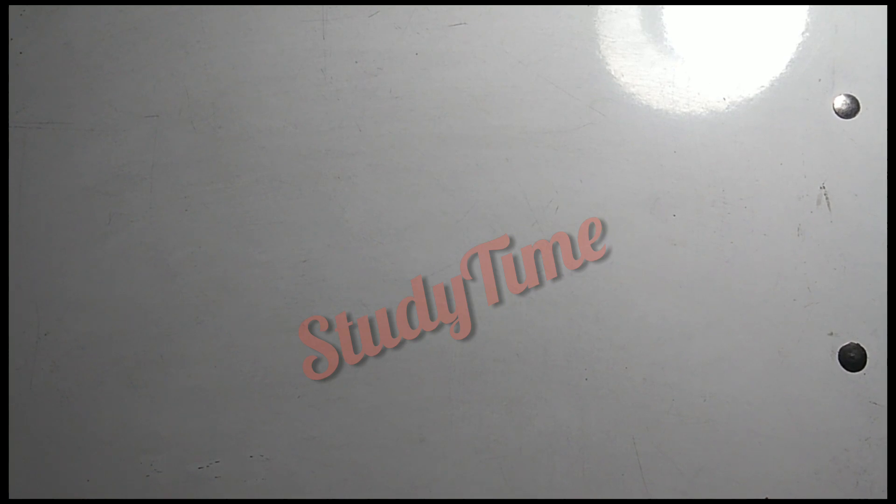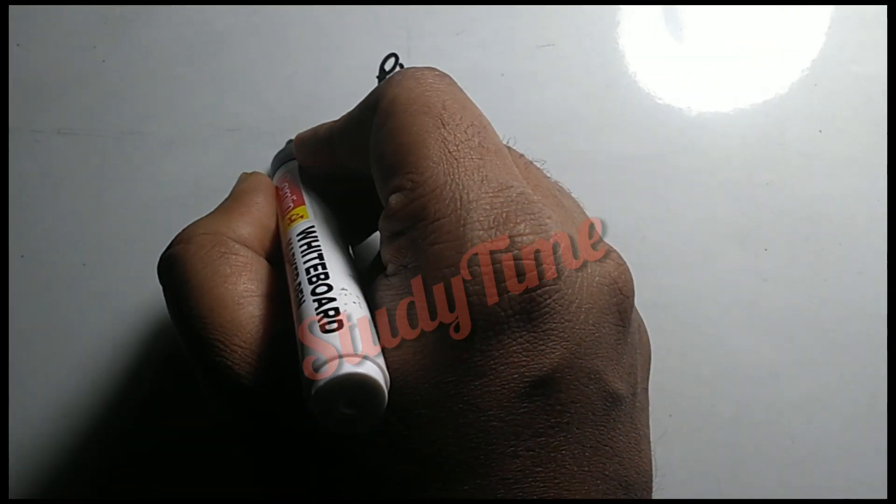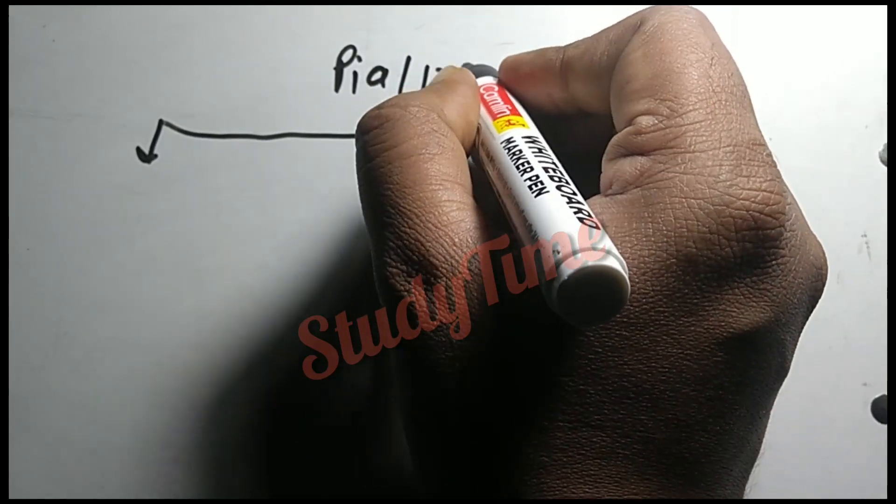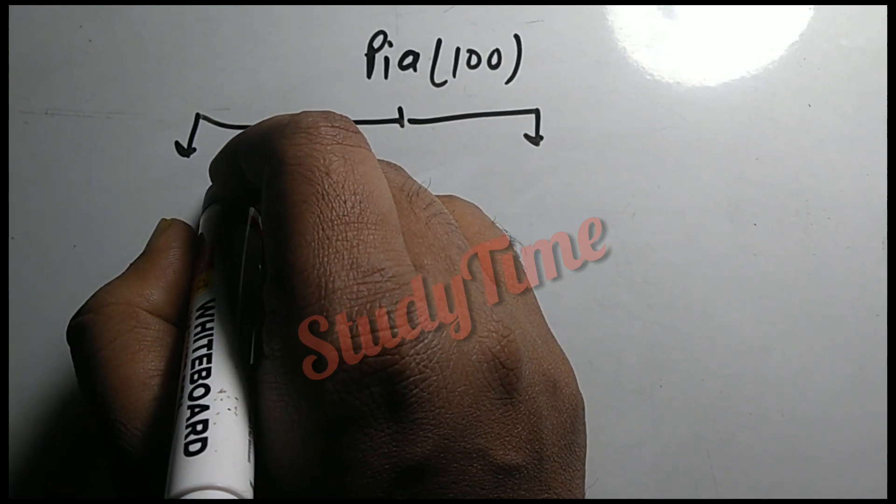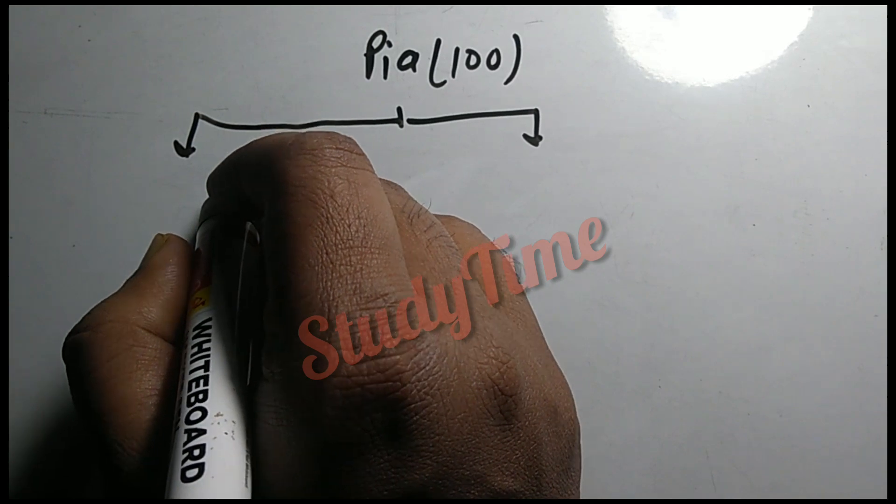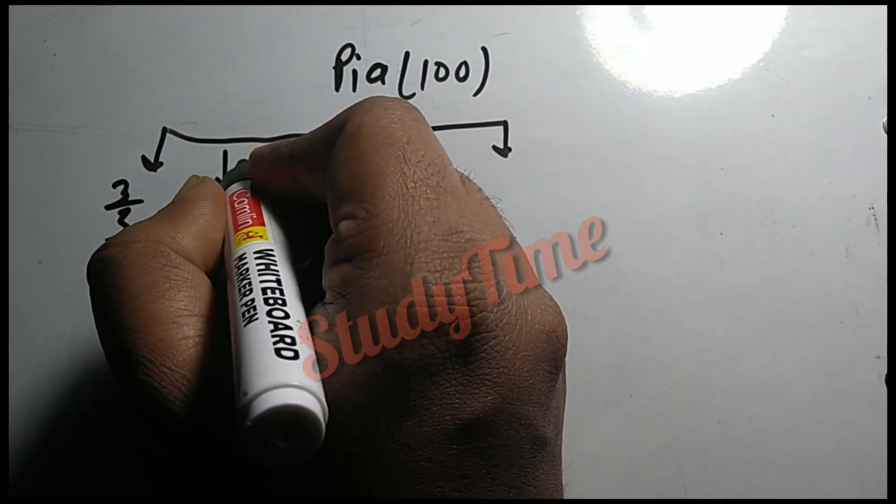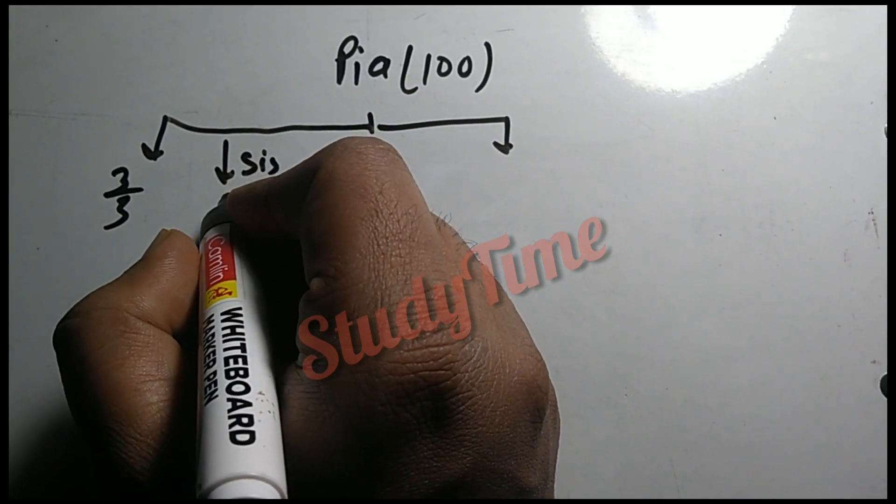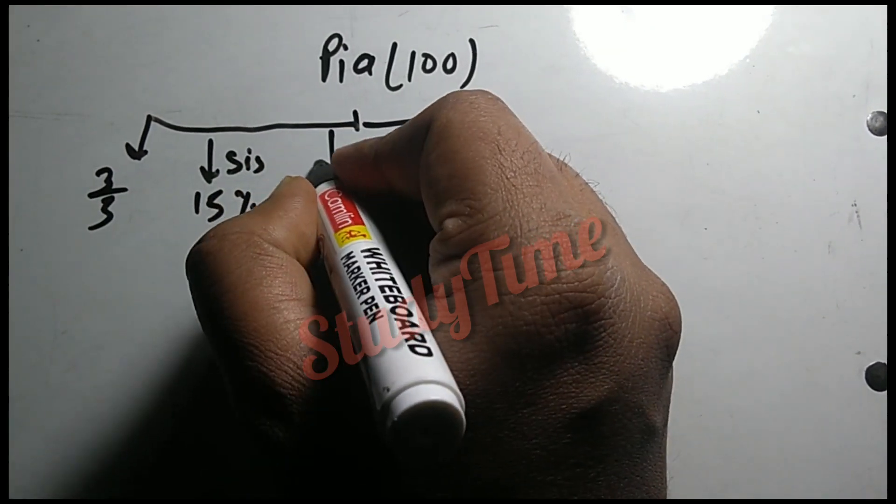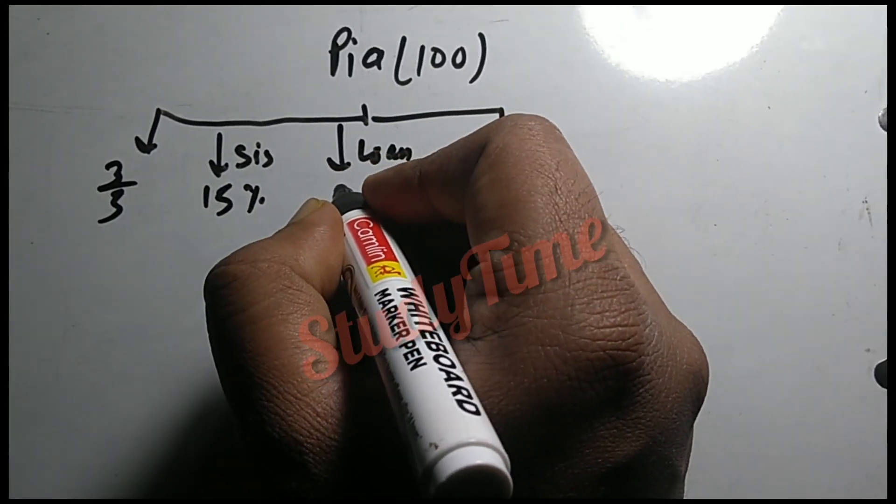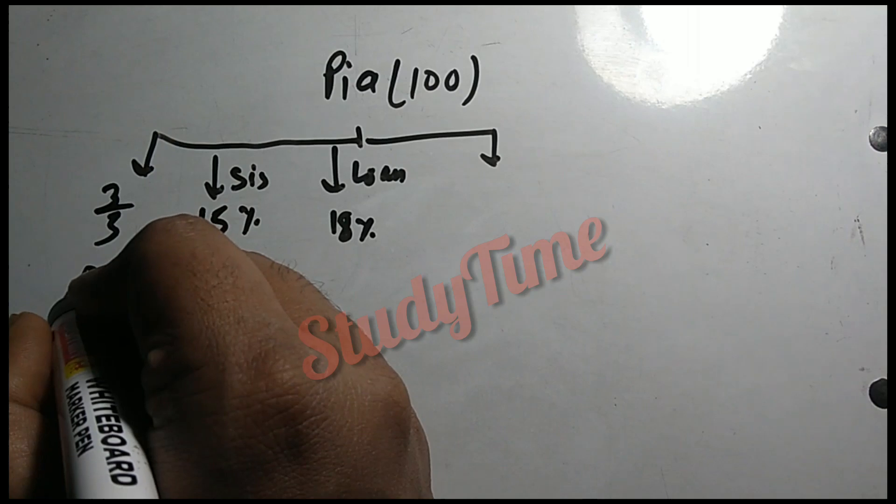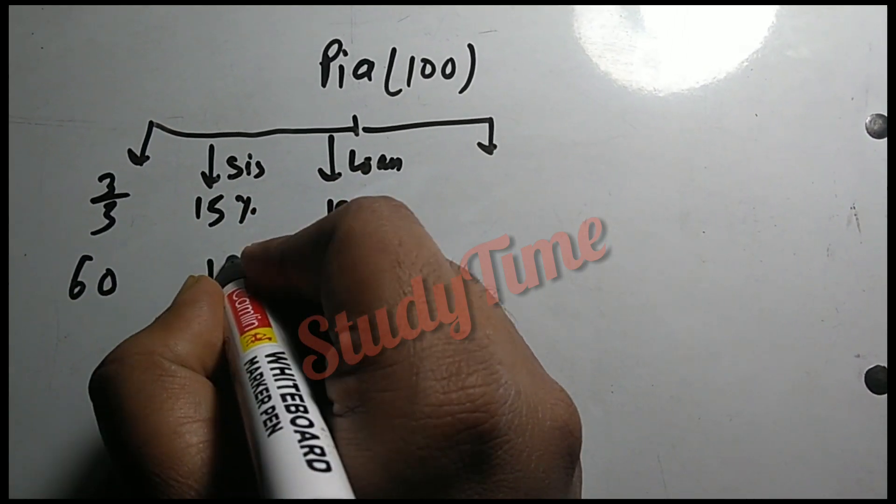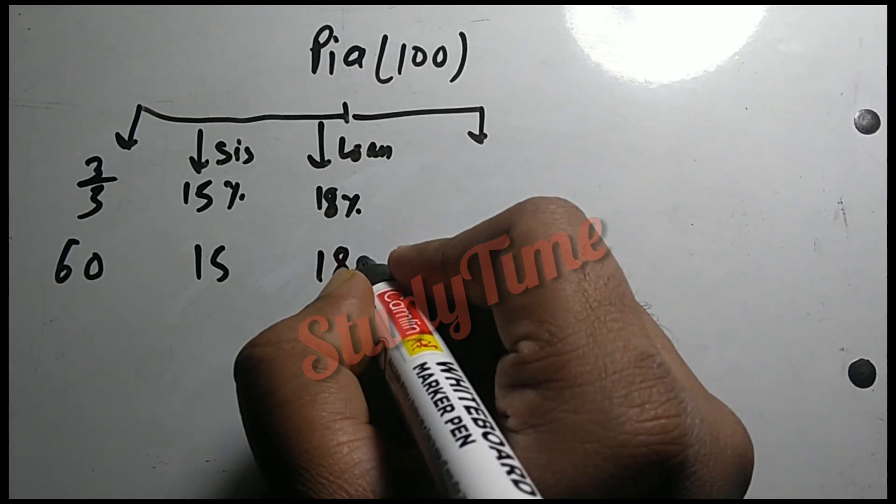Let us assume that Pia's monthly salary is 100. From her monthly salary, she gives 3/8 to her mother. The next is sister, which is 15% from her monthly salary.